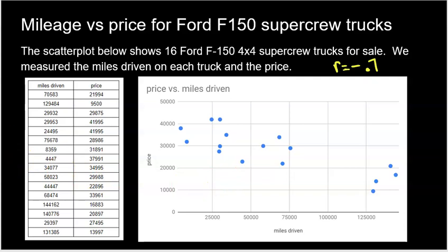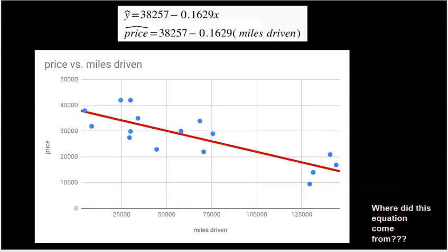This scatter plot has every dot representing an actual truck — the miles on that truck and the price of that truck. What if we want to create a model to help make some predictions? Like, I give you the miles on the truck, and you use the model to predict the price. Here is our first example of an actual linear regression model. Graphically, you can see the line in red.